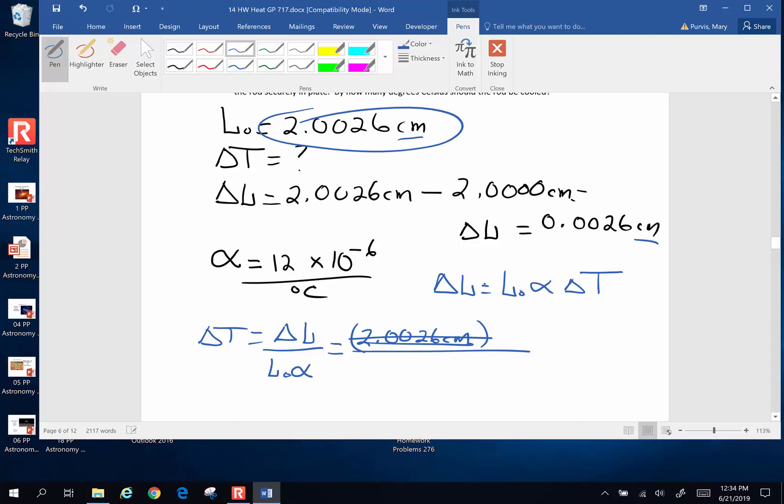Oh, I got that backwards. How about the change in length is 0.0026 centimeters. I didn't read carefully. You do that sometimes, don't you? The original length is 2.0026 centimeters, and the coefficient of linear expansion is 12 times 10 to the negative 6th per degree Celsius.